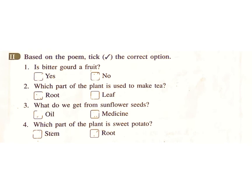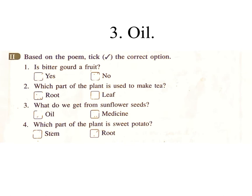Exercise 4 – Choose the correct option. 1. Is bitter gourd a fruit? Answer: Yes. 2. Which part of the plant is used to make tea? Answer: Leaf. 3. What do we get from sunflower seeds? Answer: Oil. 4. Which part of the plant is sweet potato? Answer: Root.